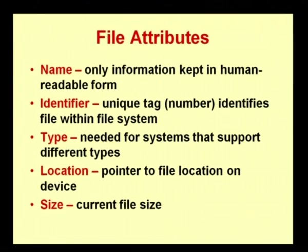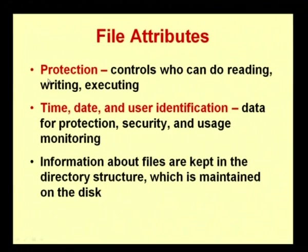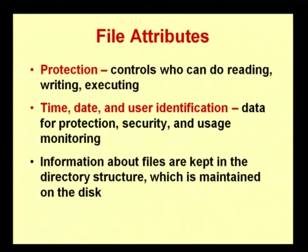Location is one file attribute. Another attribute is 'size' — how much MB or KB this particular file requires for storage. The next attribute is 'protection,' which denotes who can access the file — whether it is read-only, hidden, or whether anyone can access it with full permissions to read, update, modify, delete, or insert. If you want others not to see the file, you can hide it, which is called a hidden file.